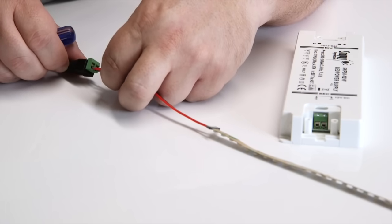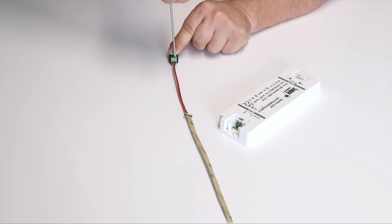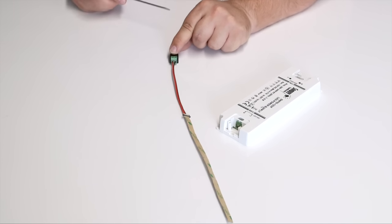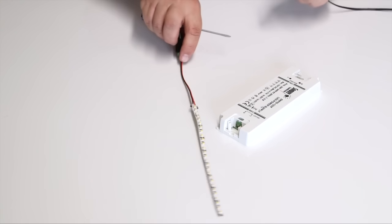Locate the wires in the screw terminals as demonstrated and tighten up the screws. Then to power the LED strip simply plug the connector from the power supply into the C4349.